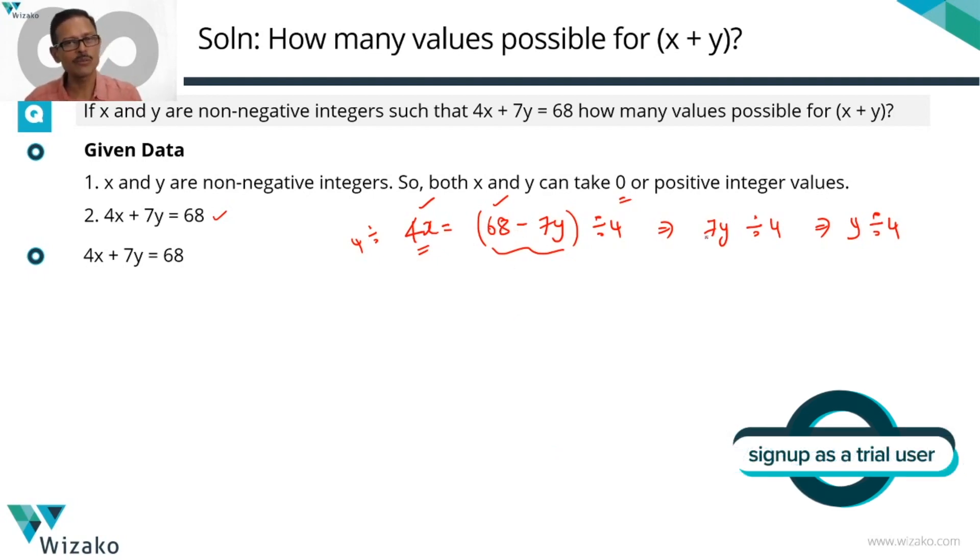y is an integer. 7y is divisible by 4. 7 is not divisible by 4. So y should be that number that's divisible by 4. y is divisible by 4.